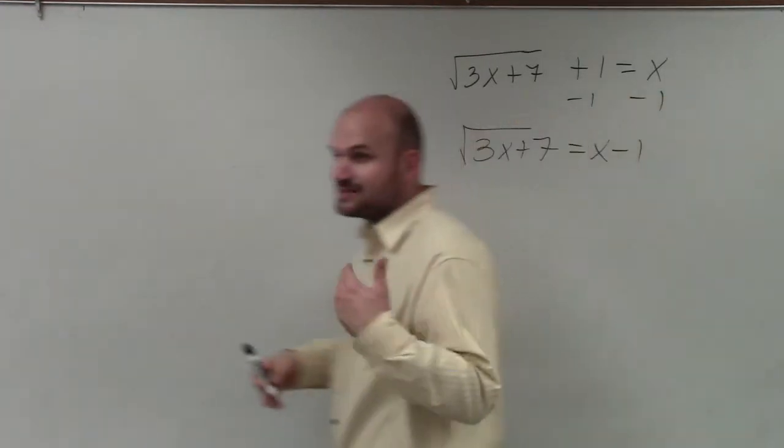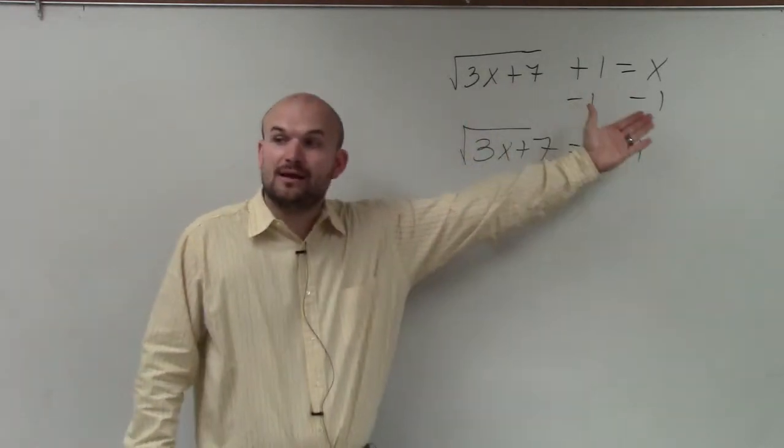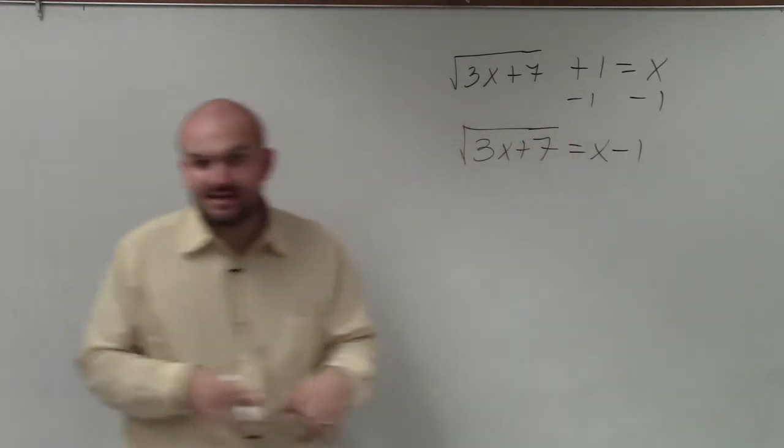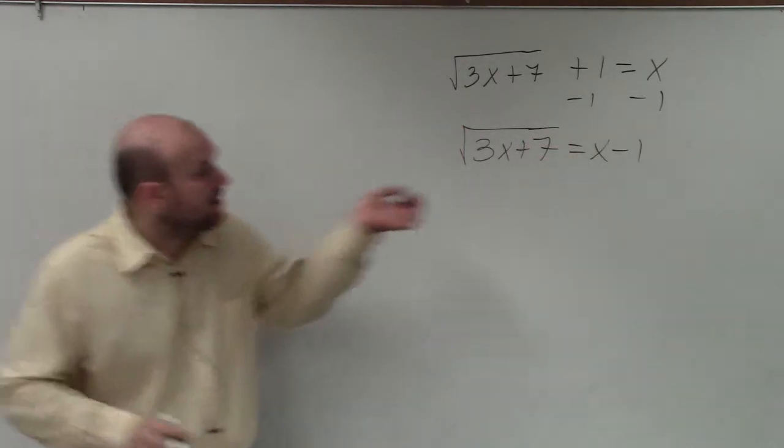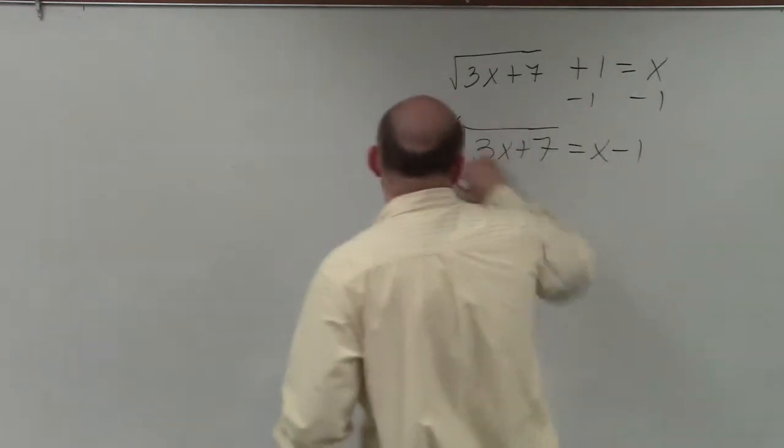So when we have this, we have the square root of 3x plus 7, we'll add 1 equals x. You're going to subtract 1 on both sides to isolate the square root of 3x plus 7. That's the main important thing, because now, once we have the square root of 3x plus 7, now I can undo that by squaring it.